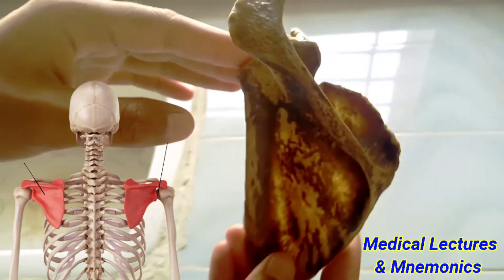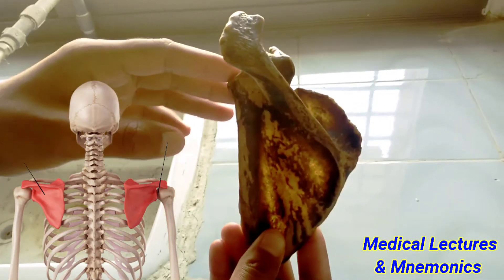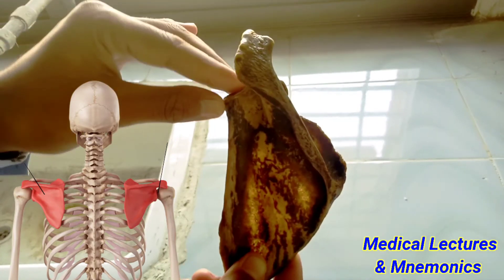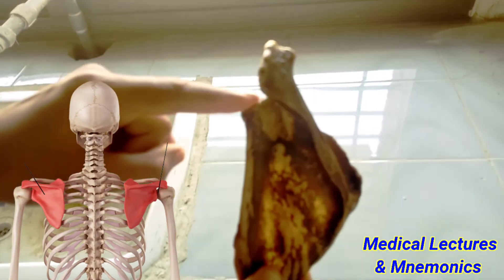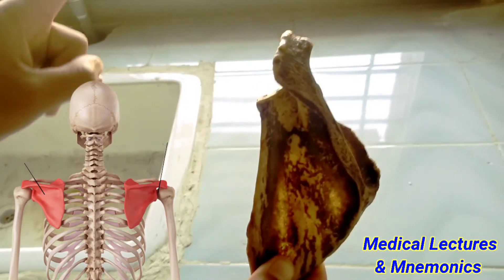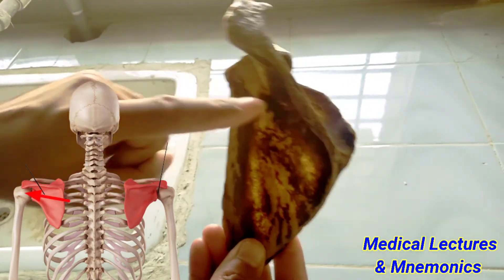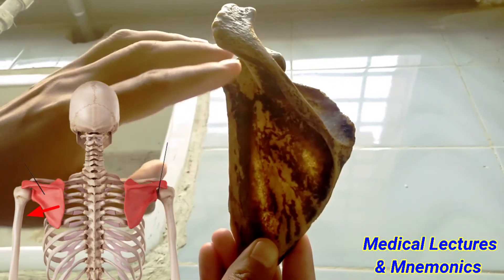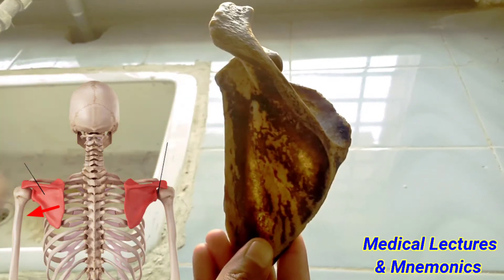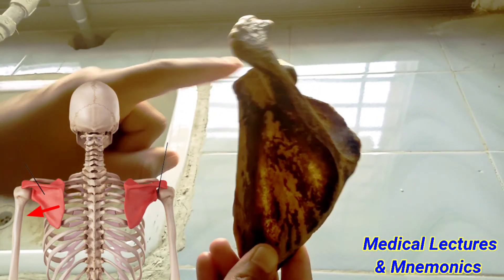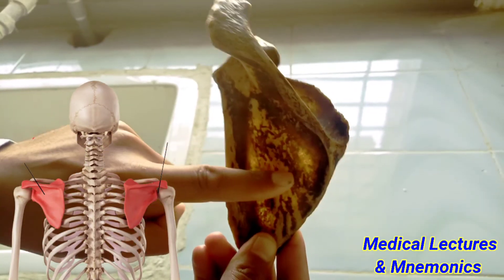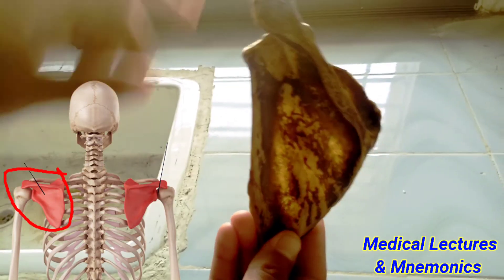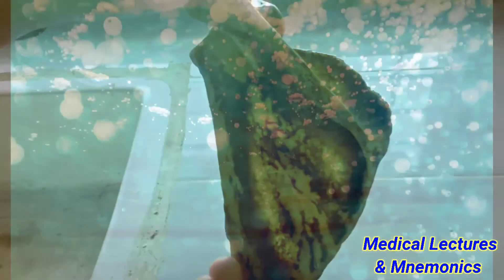For side determination: the lateral angle of the scapula is always lateral, and the dorsal surface of the scapula is always convex. These two things determine the side. So this bone is a left scapula — a left scapular bone. That was all about the scapula. Thanks for watching the video.